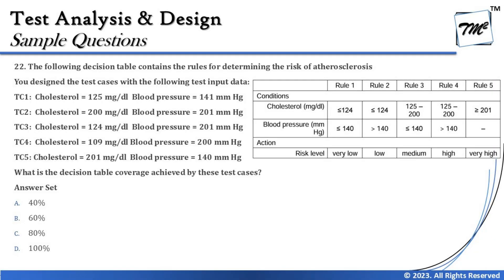Let's get started. The very first question is question number 22, picked up from the decision table — certainly one of its kind. The question states: the following decision table contains the rules for determining the risk of atherosclerosis. You design test cases with the following test input data, and the question is: what is the decision table coverage achieved by these test cases? First of all, let's understand the table.